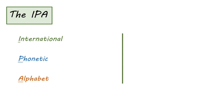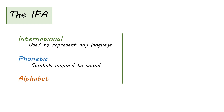The International Phonetic Alphabet: 'international' means you can use it to represent any language — so even though Arabic is usually written in a different script, you can use the IPA to write both Arabic and English. 'Phonetic' means symbols are mapped to sounds — one symbol always represents the same sound no matter the context. 'Alphabet' means symbols map to phonemes, so you have one symbol for each individual sound rather than one symbol for whole chunks like 'pob.' In an alphabet, you'd have three symbols: 'p,' 'ah,' and 'b.'